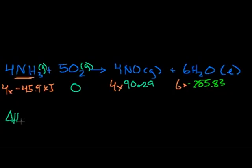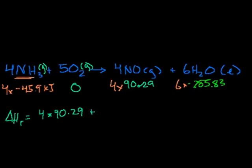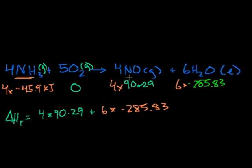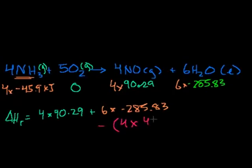So the delta H of this reaction equals 4 times the heat of formation of nitrogen monoxide — so 4 times 90.29 — plus 6 times the heat of formation of water — 6 times minus 285.83. We don't worry about oxygen since its heat of formation is zero. Then we subtract 4 times minus 45.9 for ammonia.